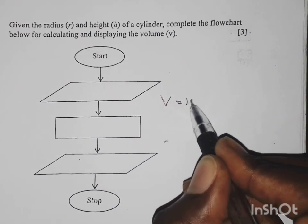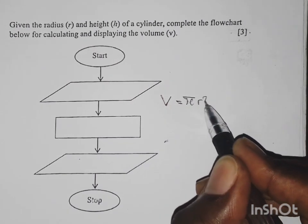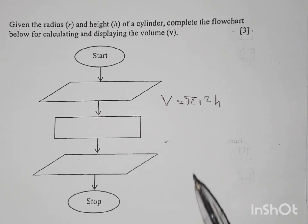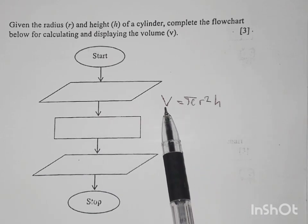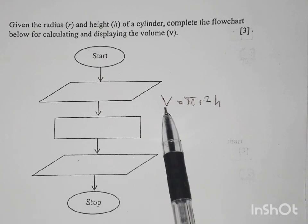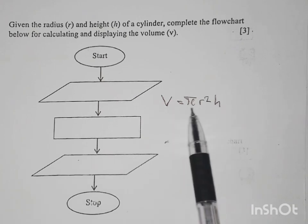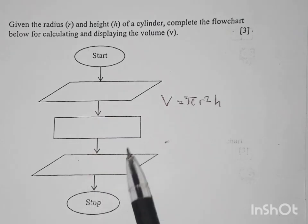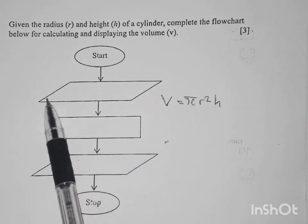So now the V is known as the output or the display, then this part here is the input. Now when you talk about a flowchart, here this symbol which is a parallelogram has two functions which is the input and output.